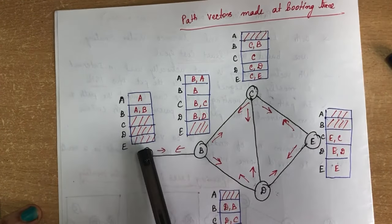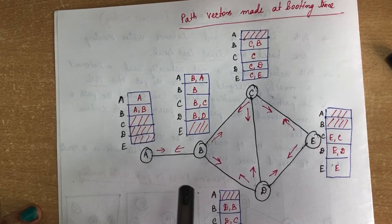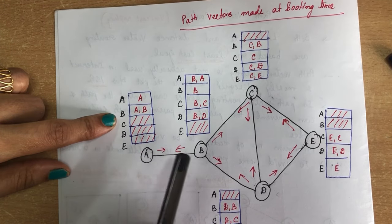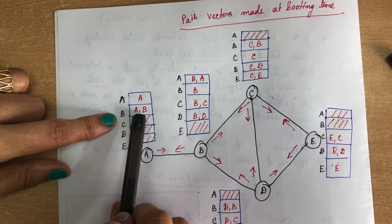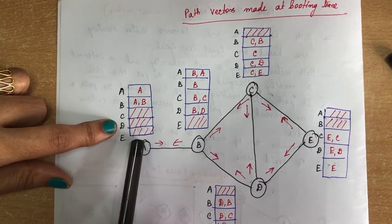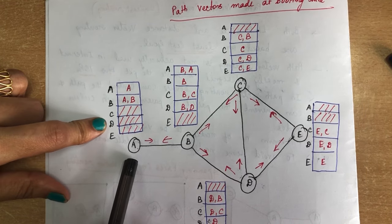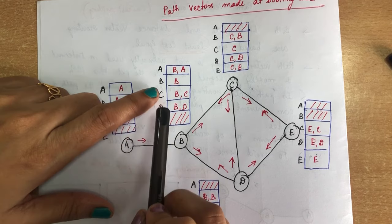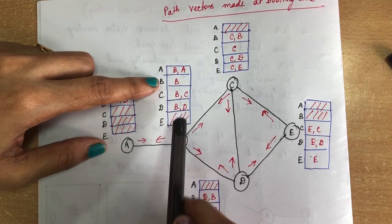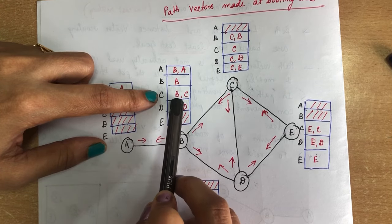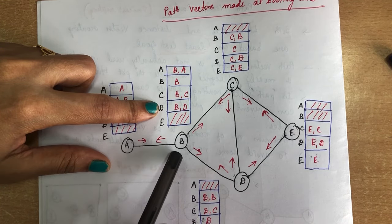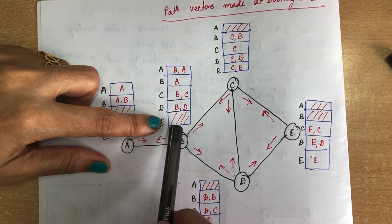Using the same network with nodes A, B, C, D, and E: for A's path vector, you can reach A with the help of A itself. If you want to reach B, it can be reached through A, B — that is why the path for reaching B is written as A, B. There is no direct path to communicate with C, D, and E, so no path is given for those. For B's path vector, to reach A you go B, A; to reach B it is B itself; to reach C it is B, C; to reach D it is B, D; and there is no direct path to E.